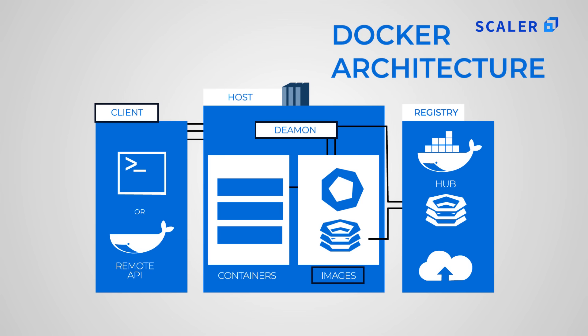Third, Docker images — these are the building blocks of Docker, required to run containers. Images contain tools, dependencies, operating system libraries, and more. Fourth, Docker registry — the repository for all Docker images; Docker Hub is the hosted registry service by Docker Inc. Fifth, Docker containers — they provide the execution environment and are the writable layer of the images.